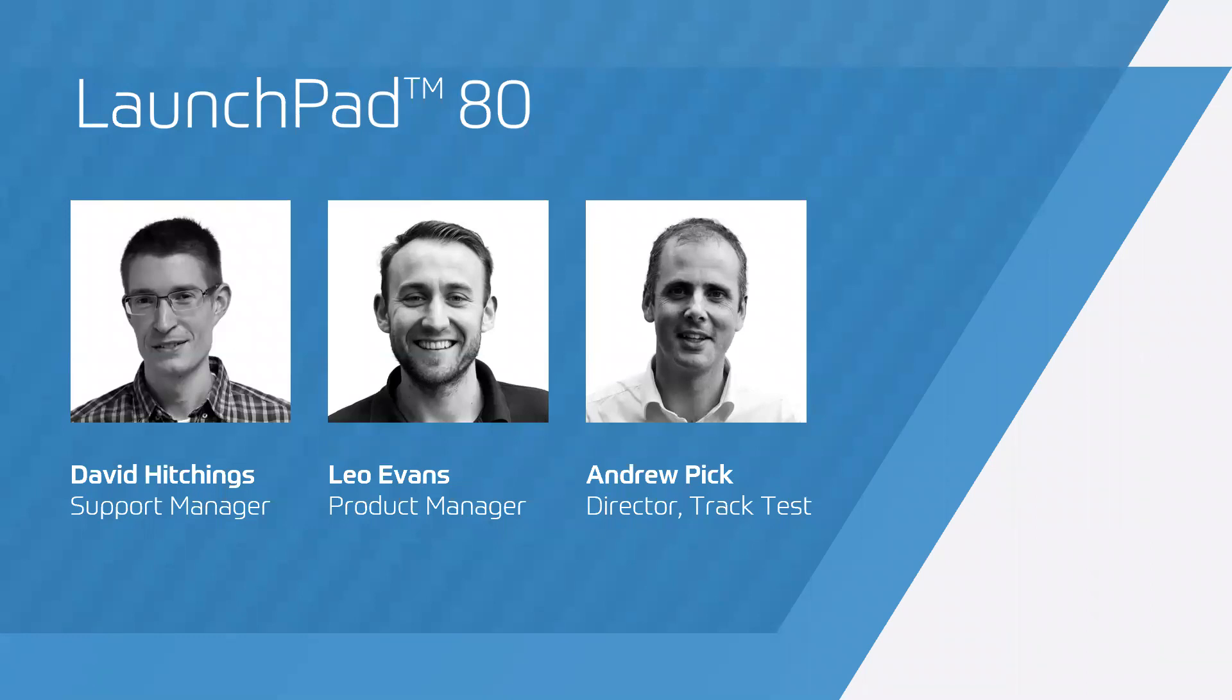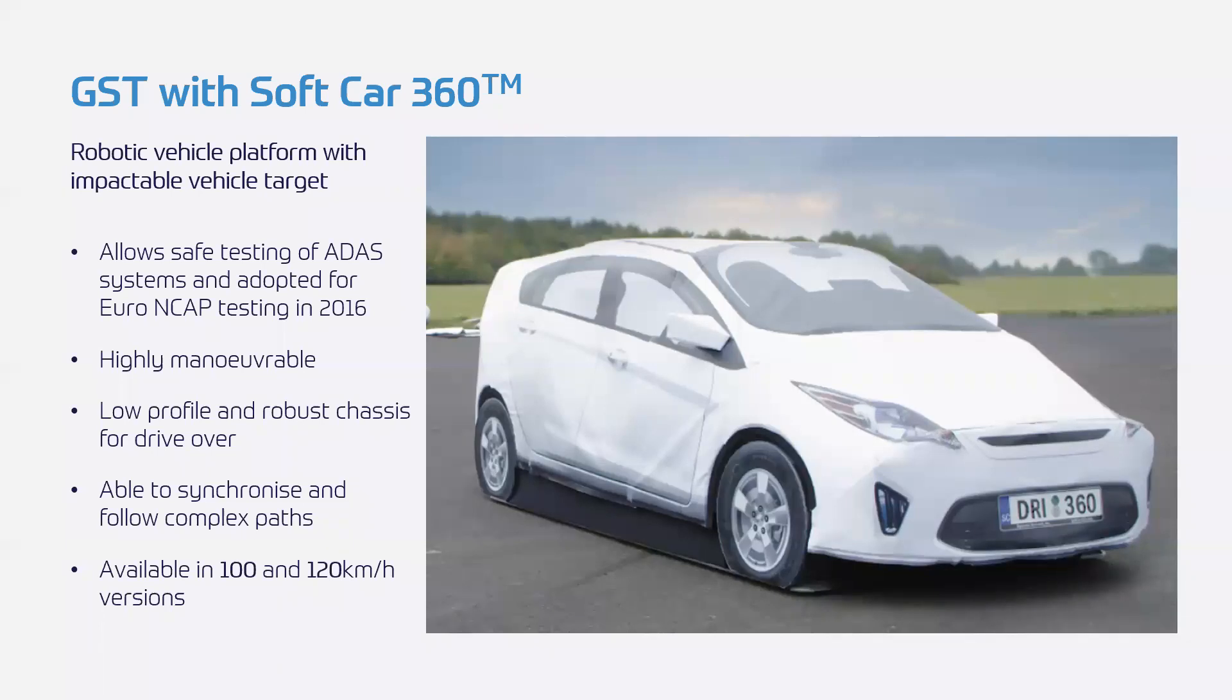So firstly I'd actually like to take a look at the GST, a familiar site in ADAS testing and actually it was a collaboration that started with DRI all the way back in 2011. DRI is actually part of the AB Dynamics group now and what we did was we incorporated our driving robot and pathway technology into a low profile driverless vehicle to carry a soft car target. Essentially the GST allows safe testing of ADAS systems and the soft car 360 was adopted by Euro NCAP in 2016 as the official global vehicle target. It first started with a max speed of 80 km per hour and now gone up to 100 km per hour and recently we've announced our GST 120 for 120 km per hour. So really the GST is an essential tool that's used industry-wide to prove ADAS technologies.